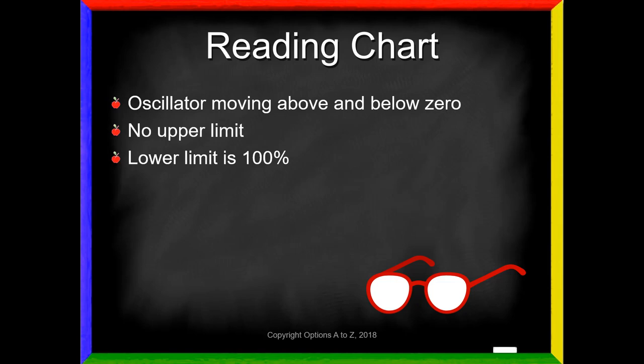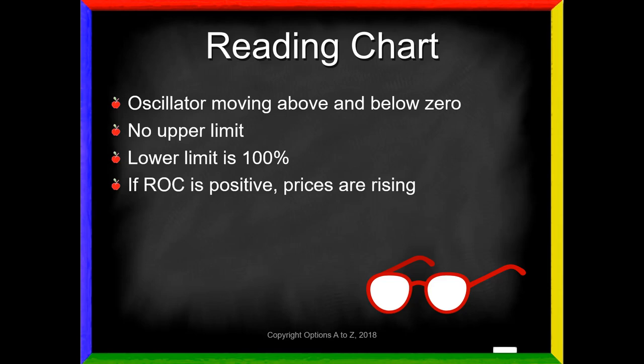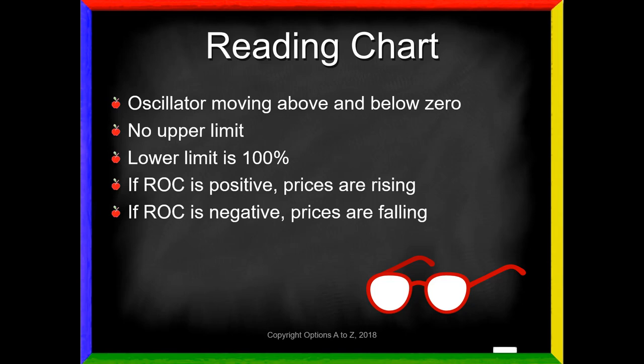Here's where the rate of change can get a little tricky, and I see a lot of new traders getting confused with this. If the rate of change is positive, your prices are rising. Just because the little line is moving down, don't think that means prices are falling. If you're in positive territory — above zero — prices are rising. If your rate of change line is negative, meaning below zero, prices are falling.